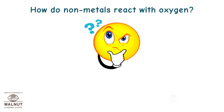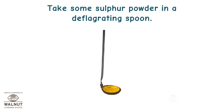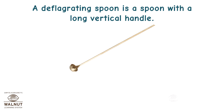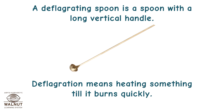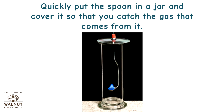How do non-metals react with oxygen? We can check this by burning a non-metal like sulphur. Take some sulphur powder in a deflagrating spoon — a spoon with a long vertical handle. Deflagration means heating something till it burns quickly. When you heat sulphur, it burns. Quickly put the spoon in a jar and cover it so you can catch the gas that comes from it.